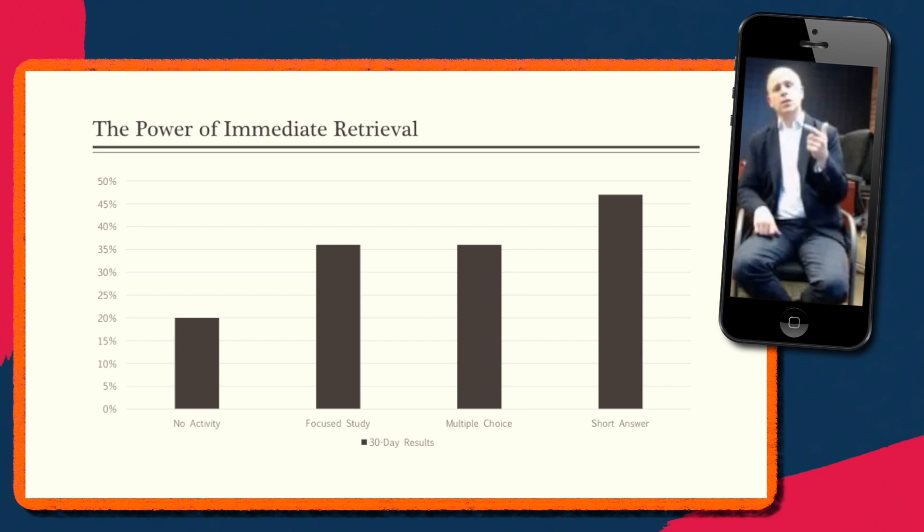They were able to score just about the same as if they took a brief multiple choice quiz at the end of each of those three lectures. And when they did that, they were able to score about 36%. But the interesting thing about this study for me is the one that produced the best learning was when students took a brief short answer quiz at the end of each of those lectures. And you see that those students were able to score about 47% on that quiz.